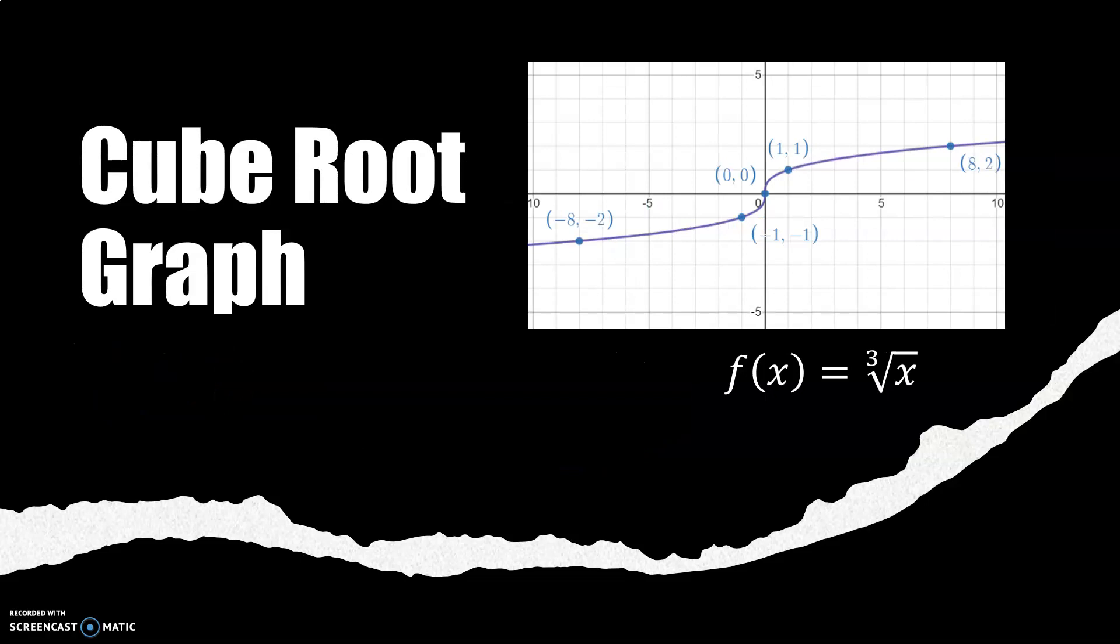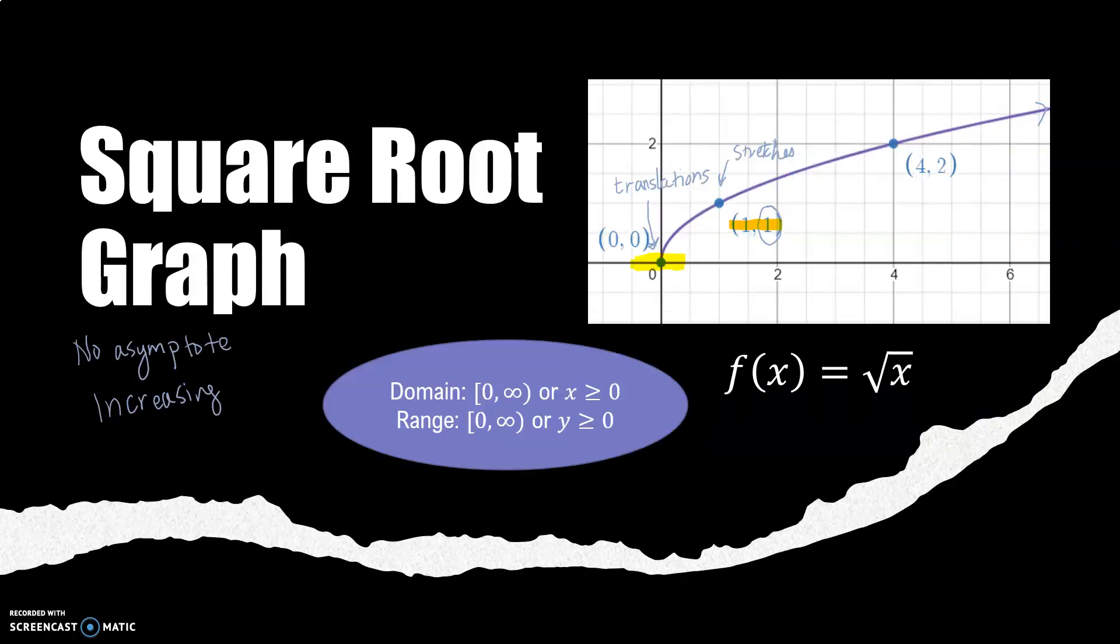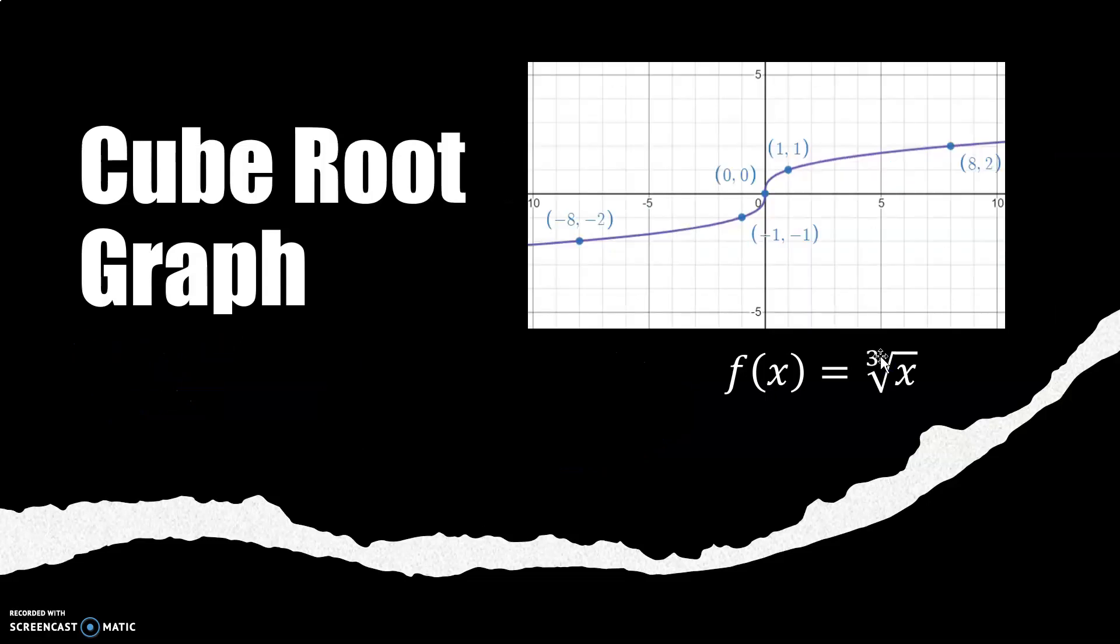The other parent is the cube root graph. So if I look at the difference between the equations, the square root graph has an invisible 2 as an index. We don't usually write the 2 for the square root function. The cube root function has a 3 for an index.